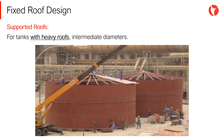Supported roofs share the same characteristics as the self-supporting type, although in this case a structure is used to support the roof plates. The main reason for using a frame is due to the weight of the plates to be supported and the external loads applied to the roof — such as weight, mechanical elements, snow, etc. Depending on the diameter of the tank and the loads to be supported, the roof will be designed with or without columns.